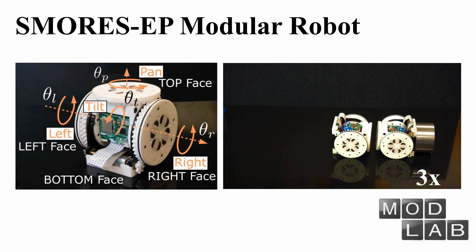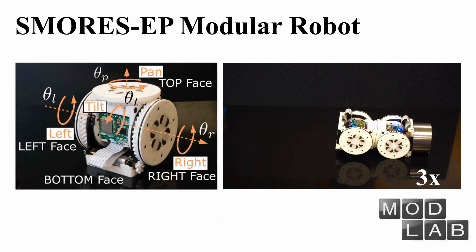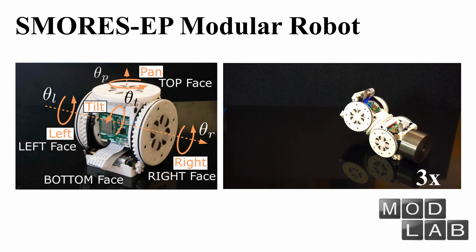SMORES EP is a hybrid modular robotic system. Each module has four degrees of freedom and four connectors.